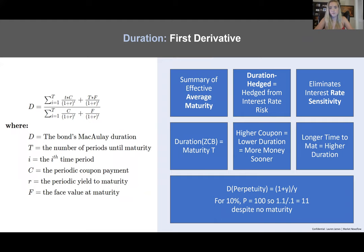Let's review fixed income so we can discuss how mortgage-backed securities and other callable bonds are short convexity. Duration is the summary of the effective average maturity dates. If you're duration-hedged, you're hedged from interest rate risk within small changes in yields — this only applies locally. Within the local region, you have a tangent line approximation, and with small moves in either direction, that will be fine. Duration is longest when you have lower coupons or no coupons, as it's the weighted average of discounted payment dates.